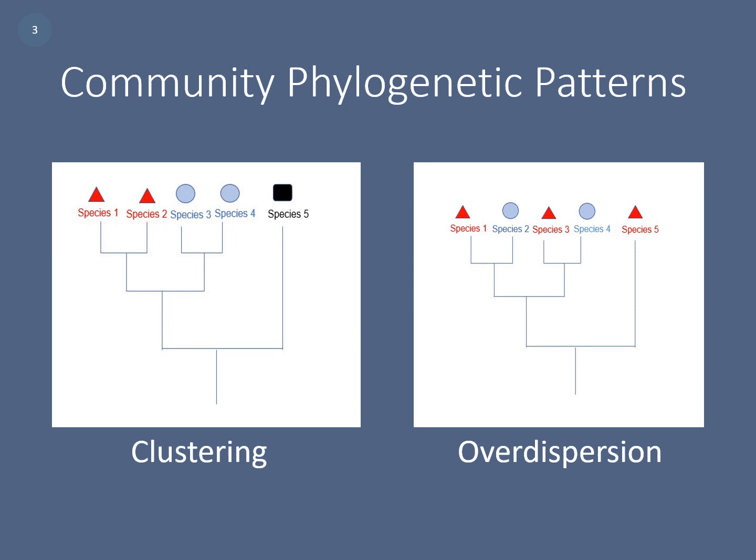Clustering is often caused by environmental filtering. Closely related species possess the traits needed to survive in the habitat, while more distantly related species may lack these traits and therefore not be found in this environment.